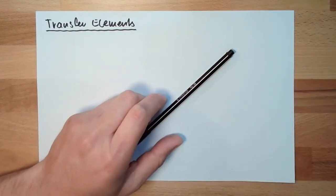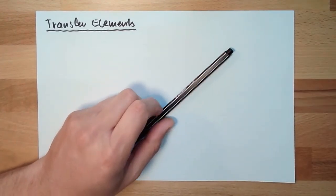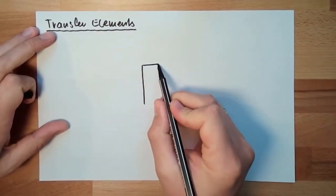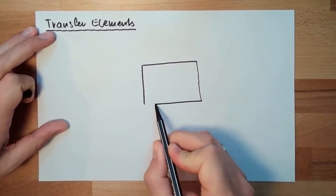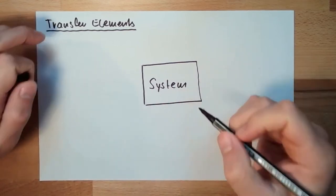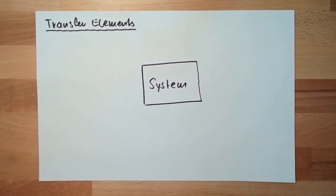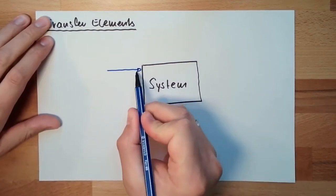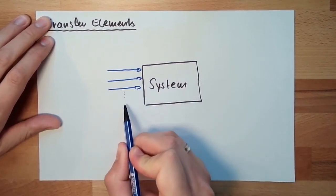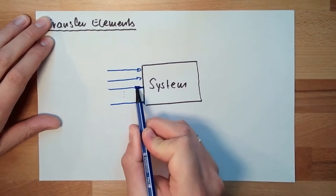What is a transfer element? A transfer element is some sort of a system. So I do have some system here, and this system does have a bunch of inputs. There is one input to the system, another input to the system. There might be a lot of inputs to the system.